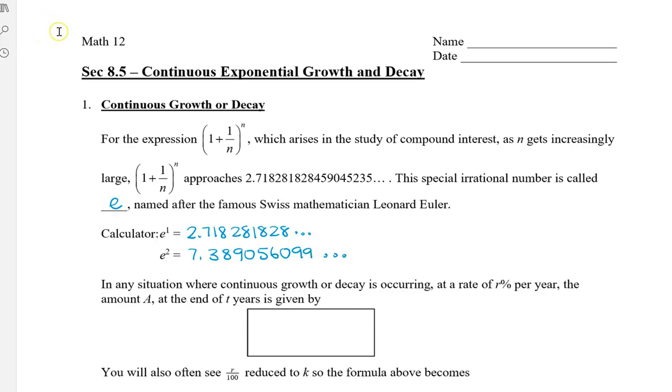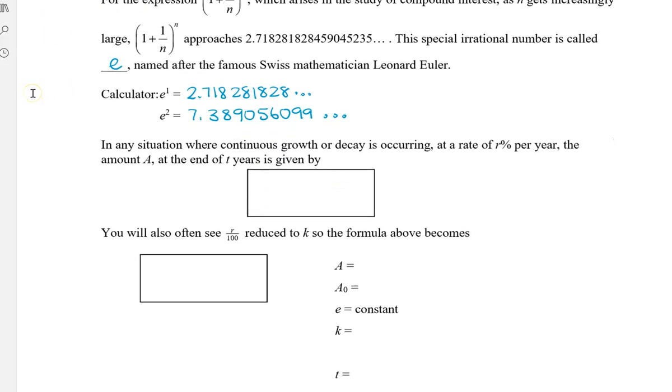So in any situation where continuous growth or decay is occurring at a rate of r percent per year, the amount a at the end of t years can now be given by this new formula. So it's a is equal to a naught times e, and then the exponent changes to r divided by 100 times t.